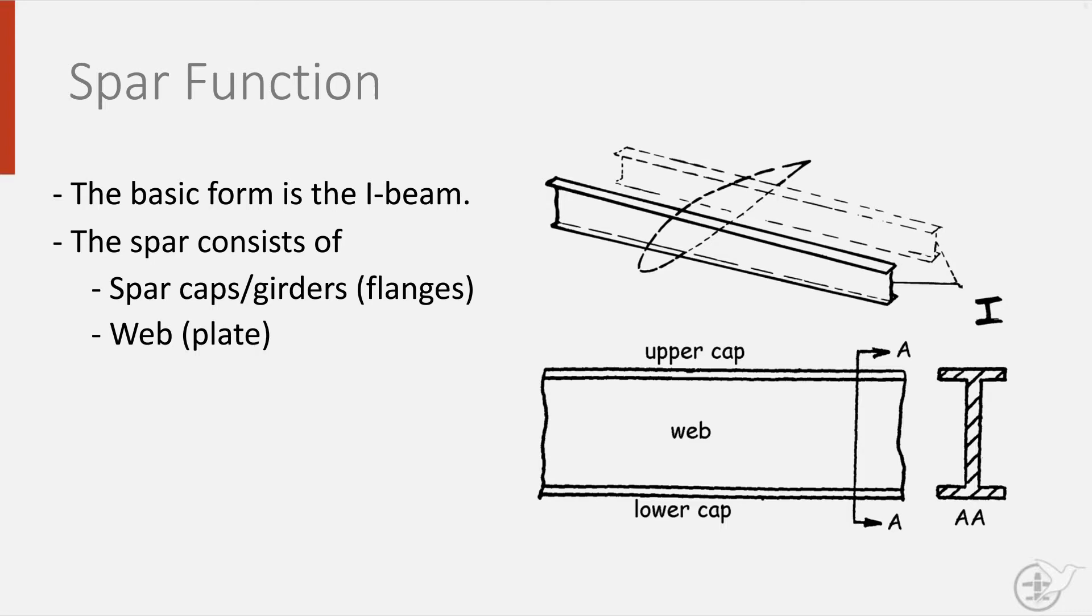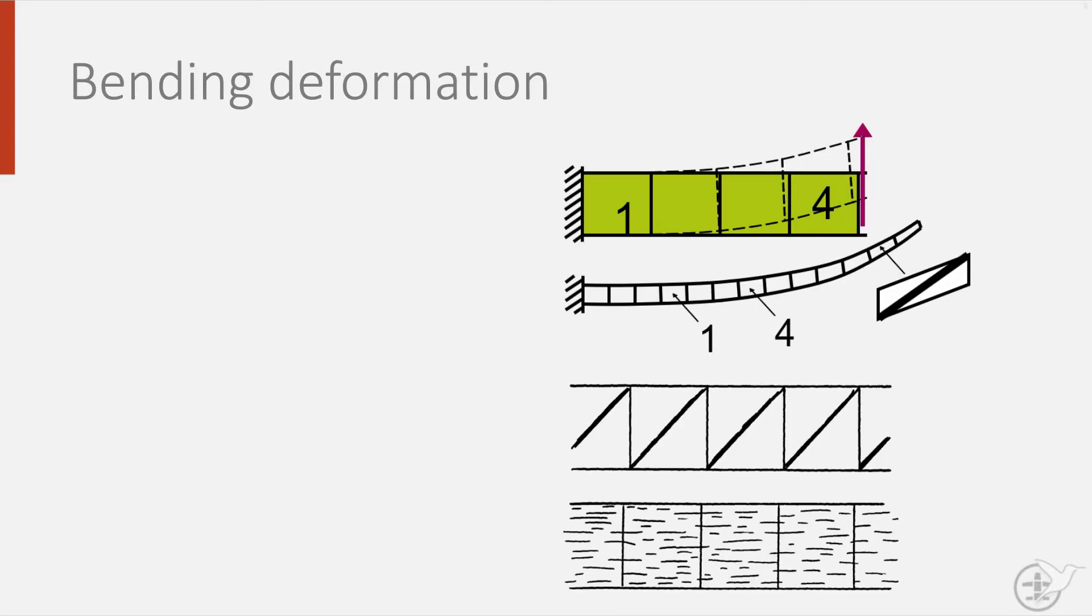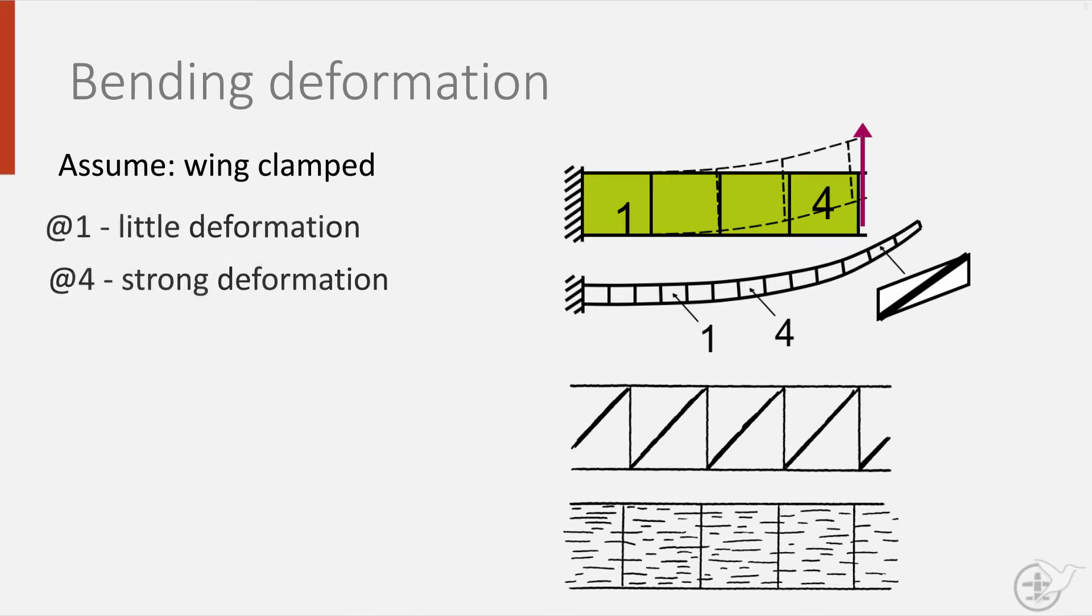The attachment of the spar to the fuselage can best be explained as if the spar is clamped in at one end. Due to the bending of the wing, the spar also deforms, with the deformation increasing away from the wing root where the spar is clamped.